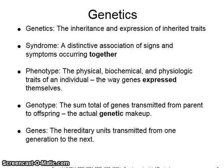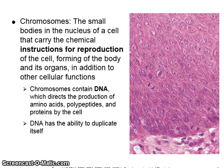The gene is the hereditary unit which is transmitted from one generation to the next. Chromosomes are the small bodies in the nucleus of a cell that carry the chemical instructions for reproduction of the cell, the forming of the body and its organs, and other cellular functions. Chromosomes contain DNA which directs the production of amino acids, polypeptides, and proteins by the cell. DNA has the ability to duplicate itself. Chromosomes are basically the blueprint for how to make the body.